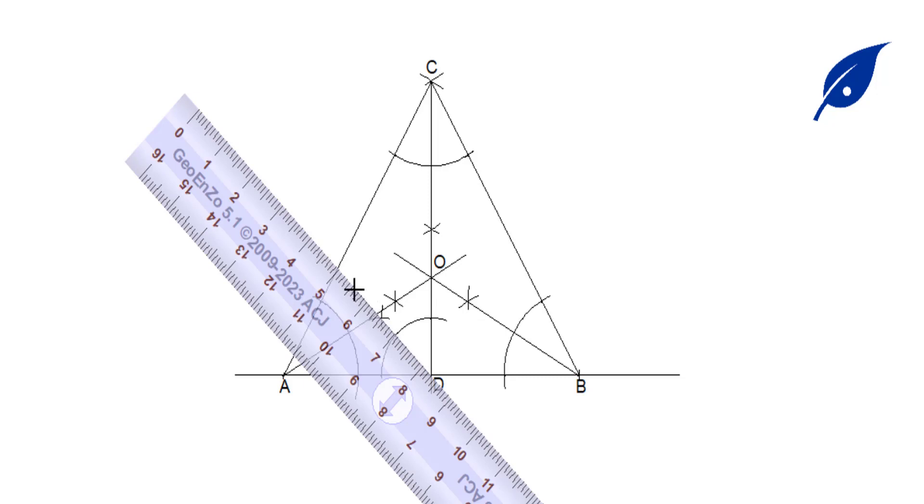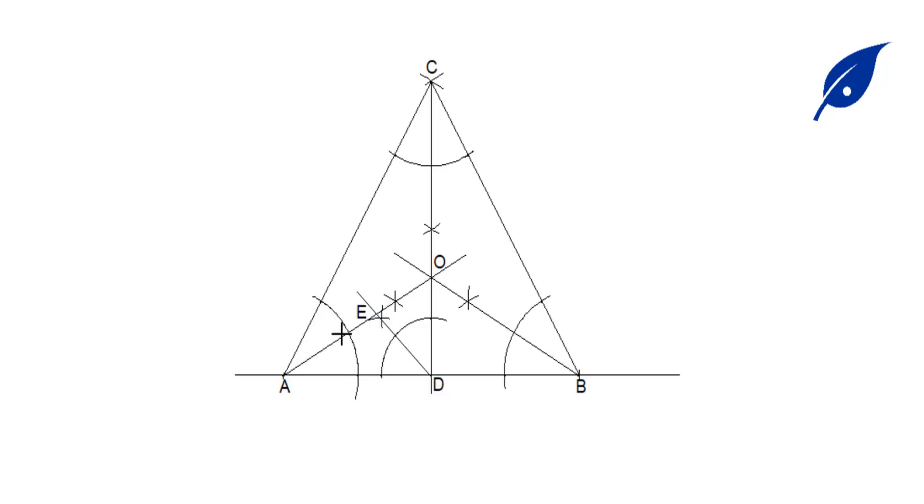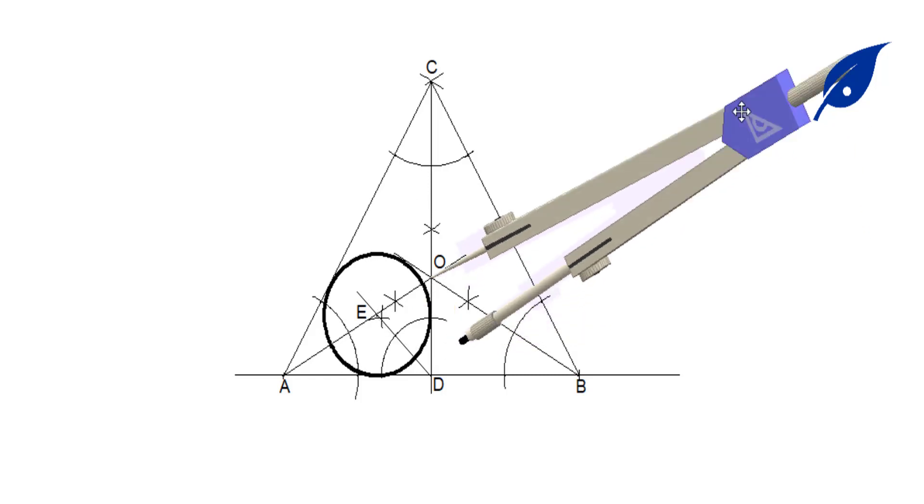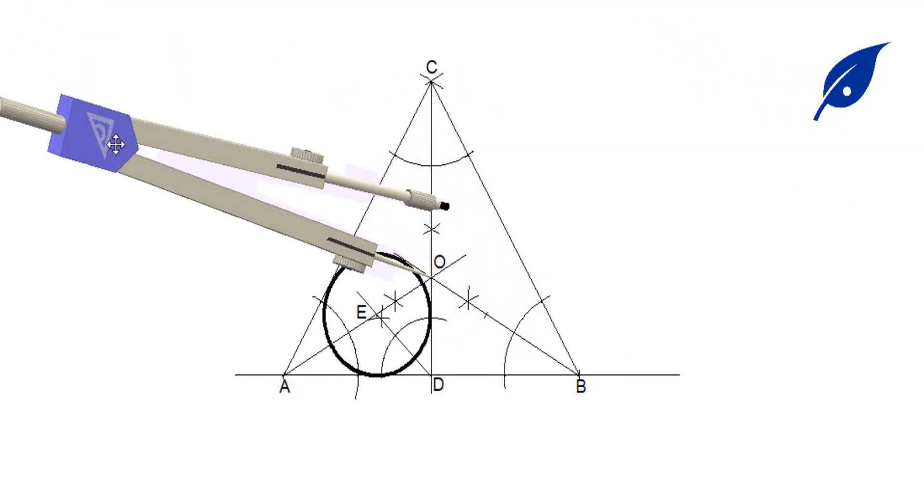Point E is the center of the first circle. At this point, we'll open our compass with the center at E and radius EO.